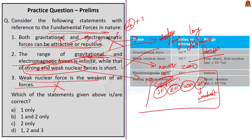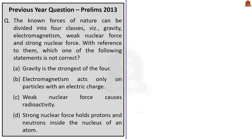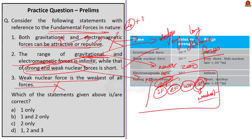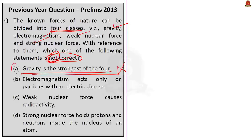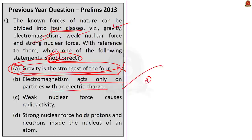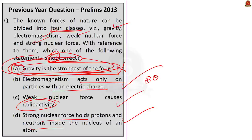Let us also see a past year preliminary question from 2013. The known forces of nature can be divided into four classes: gravity, electromagnetism, weak nuclear force, and strong nuclear force. Which of the following statements is not correct? Option A: gravity is the strongest of the four. We saw gravity is the weakest of the four — so just by reading statement A, we can arrive at the answer. Option B: electromagnetism acts only on particles with an electric charge — yes, we saw that. Option C: weak nuclear forces cause radioactivity — it is a nuclear force, so that is also right. Option D: strong nuclear force holds protons and neutrons inside the nucleus of an atom — we saw this statement directly in the discussion. So the right answer is option A: gravity is the strongest of the four.